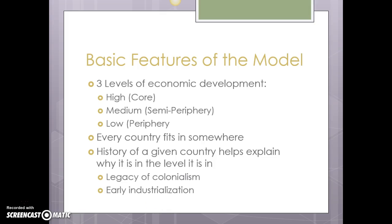Some basic features of the model: it has three levels of economic development — a high level, a medium level, and a low level. The terms used for these types of development are: at high we call it the core, at medium we call it the semi-periphery, and at low we call it the periphery. Every country fits in somewhere. This is very much a geographic model of development, and you can see it in regions when we look at maps.